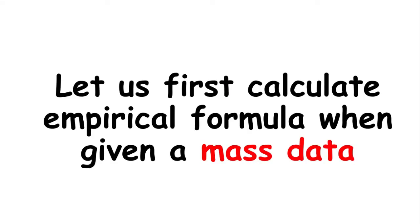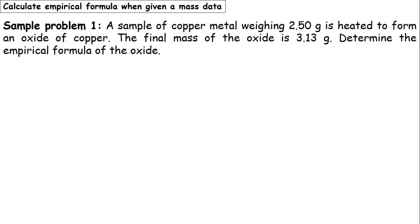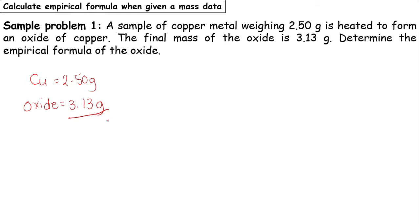Let's start with empirical formula given mass data. Sample problem number one: a sample of copper metal weighing 2.50 grams is heated to form an oxide of copper. The final mass of the oxide is 3.13 grams. Determine the empirical formula of the oxide. The first step is to determine the mass. We have copper, Cu, with 2.50 grams, and the oxide with 3.13 grams. We get the mass of oxygen by subtracting: 3.13 minus 2.50 grams, giving us 0.63 grams of oxygen.